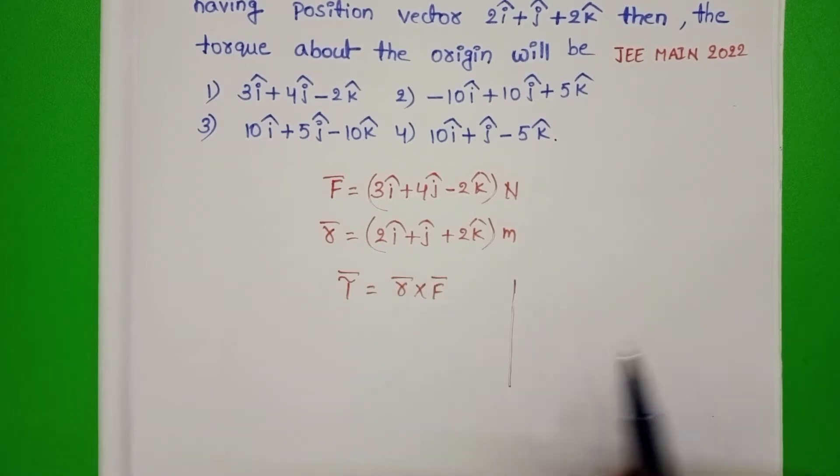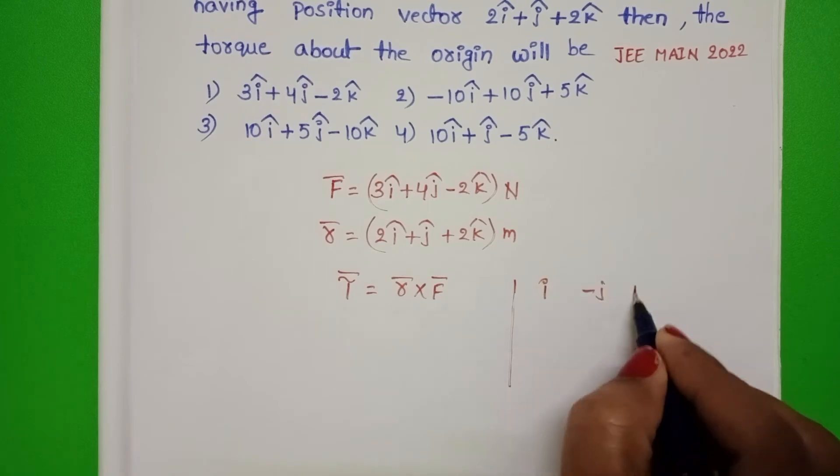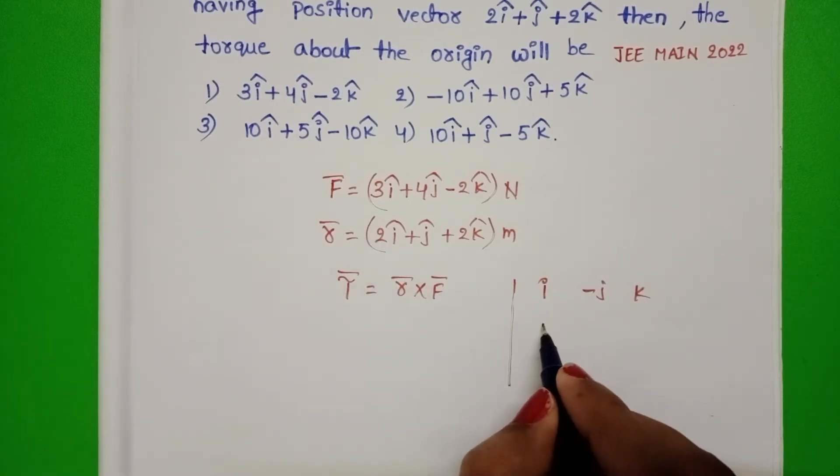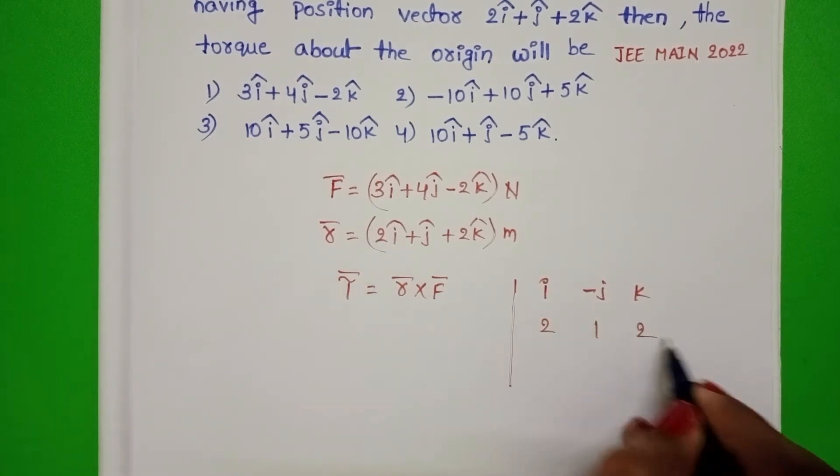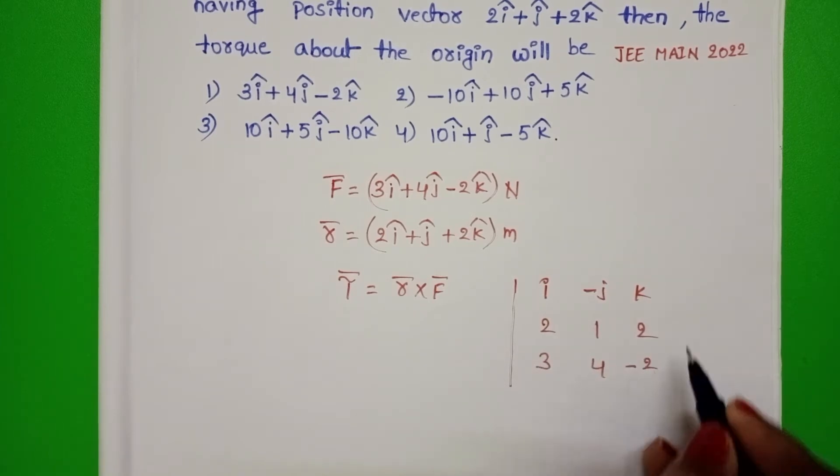Find out the cross product of position vector and force. First take position vector 2 plus 1 plus 2 and force 3, 4, minus 2.